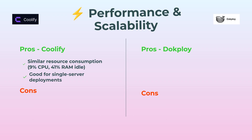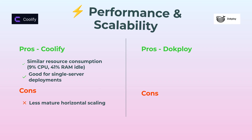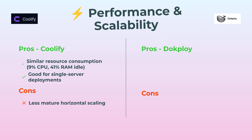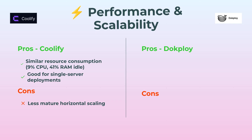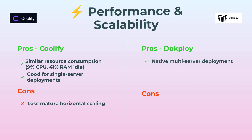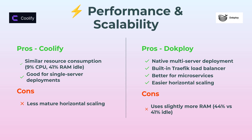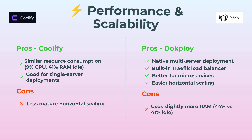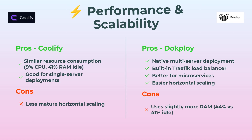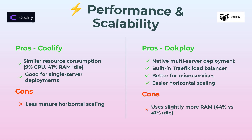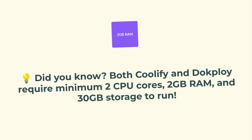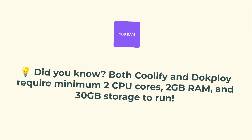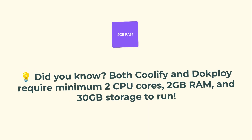Now, performance and scalability — here's where things get spicy. Coolify is great if you're on a single server, pretty modest on CPU and RAM. But when it comes to spreading out across multiple servers, it's less mature and you might feel that pinch. DocPloy shines in multi-server deployments. It has a native load balancer, handles microservices like a champ, and horizontal scaling is just easier. It uses a bit more RAM, but if you plan to grow, that trade-off is worth it — DocPloy takes this one. And here's something cool: both Coolify and DocPloy need at least two CPU cores, two gigs of RAM, and 30 gigs of storage just to run smoothly, so don't skimp on your server setup.